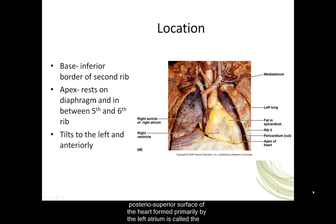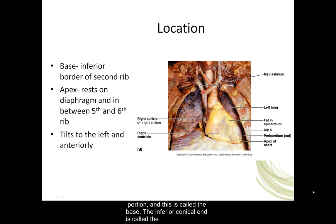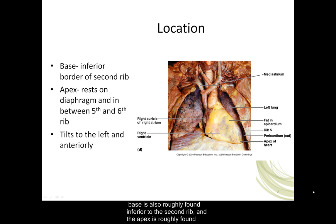The posterior superior surface of the heart, formed primarily by the left atrium, is called the base. The widest portion of the heart is its superior portion, and this is called the base. The inferior conical end is called the apex, and it projects slightly anteriorly and inferiorly toward the left side of the body. The base is roughly found inferior to the second rib, and the apex is roughly found between the fifth and sixth rib. The heart rests on top of the diaphragm.